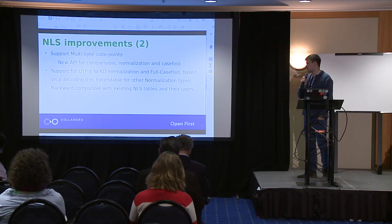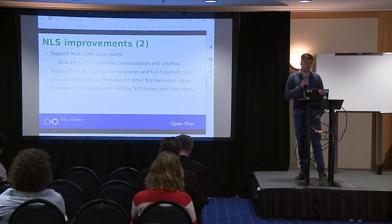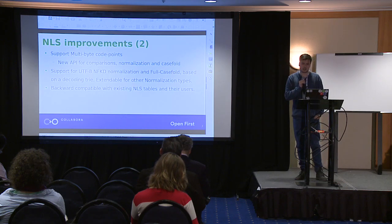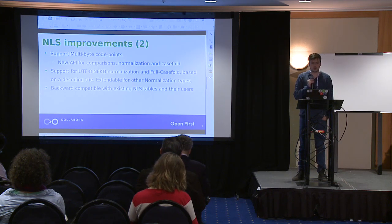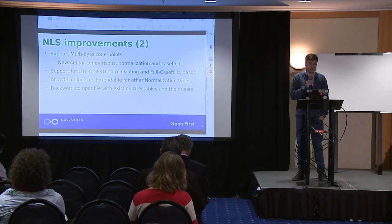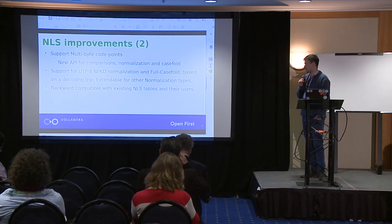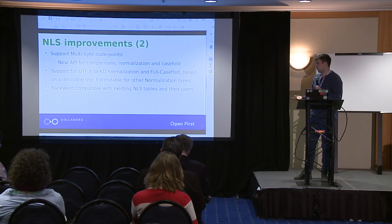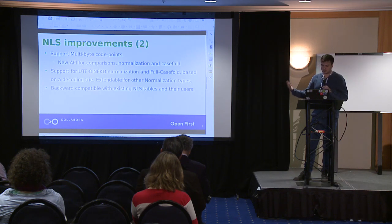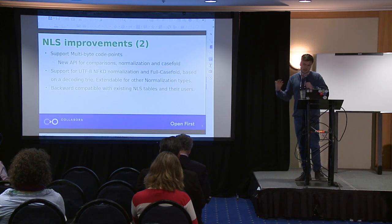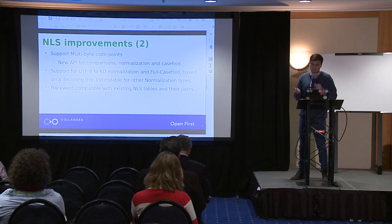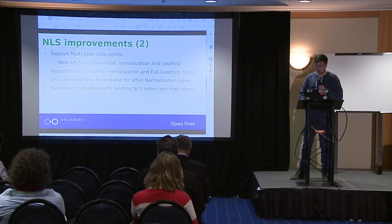This is also extensible for other normalization types. We are using NFKD because that implementation was already available from the SGI work in 2014, but if we decide to one day support a file system like APFS — which I believe uses NFD — we can simply extend UTF-8 to support that in a separate module. I also made sure to make all these transformations to the NLS API backwards compatible with all the existing code and existing character sets in the NLS. I'm not implementing normalization and case folding for them, but the old API is still there and compatible.